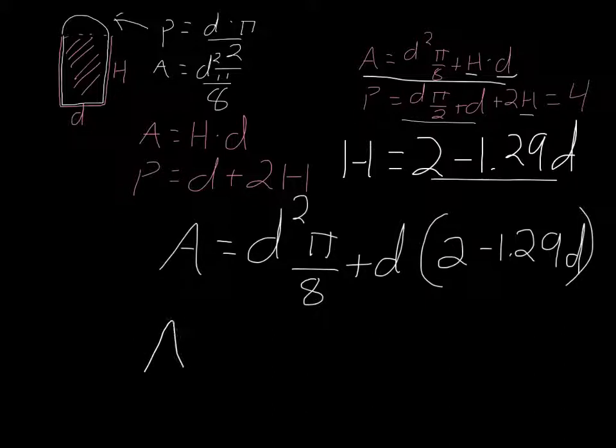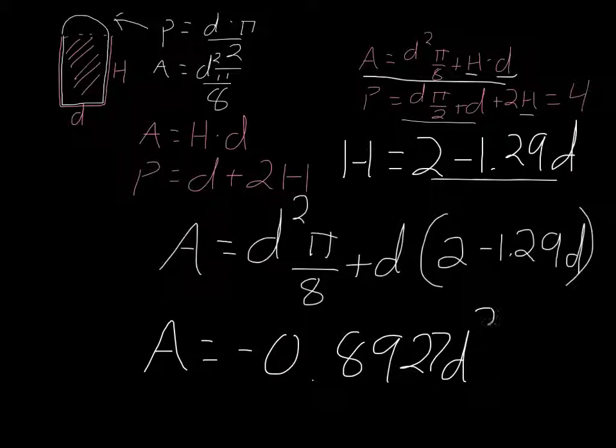And then we can simplify all that to be A = -0.8927d² + 2d. Okay, so now we know what the area is. Remember, the area is the thing that we're trying to maximize.